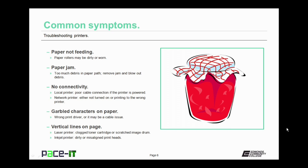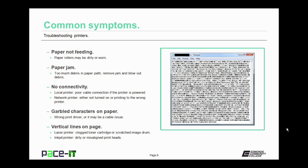The symptom of no connectivity is dependent upon what kind of printer it is. If it's a local printer, it's probably caused by poor cable connections, especially if the printer is powered up. On a network printer, it's usually caused by the printer either not being turned on or the user trying to print to the wrong printer. Every once in a while, a print job will come out with garbled characters, usually caused when the wrong print driver is being used or it can point towards a cable issue.